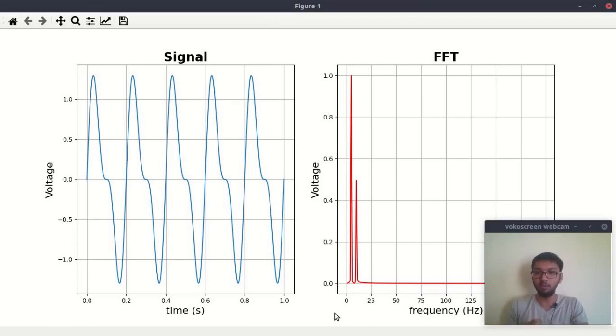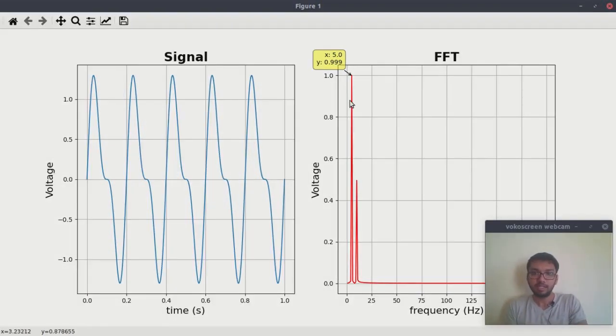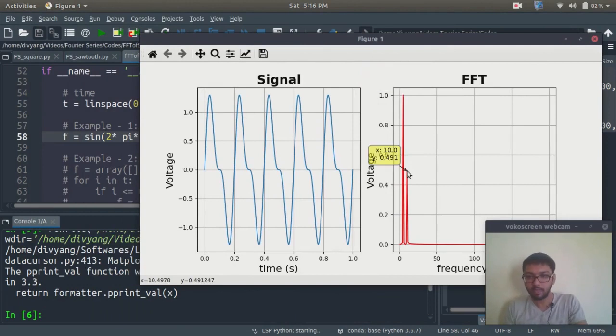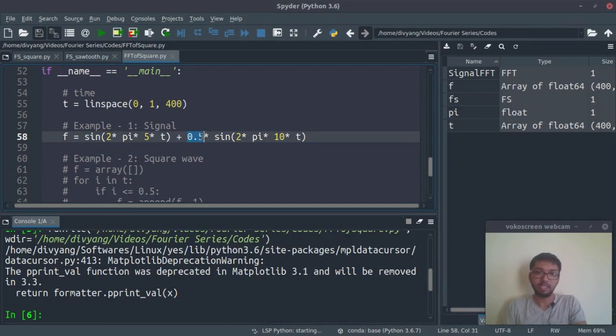Let's see what FFT can give us. This is the actual signal, and this is the Fast Fourier Transform of the signal. If you notice, here we have a sharp peak at 5 hertz at 0.999, which is the amplitude of signal. Down here we have one more peak with 10 hertz frequency and 0.49 amplitude.